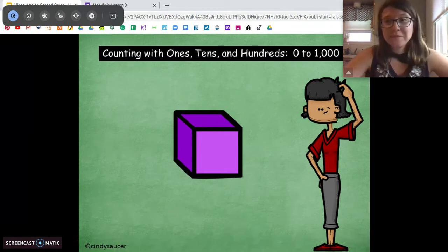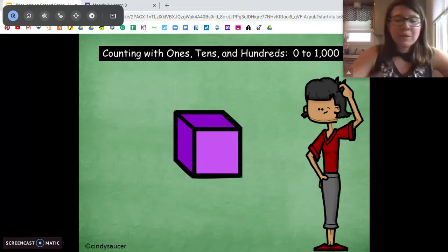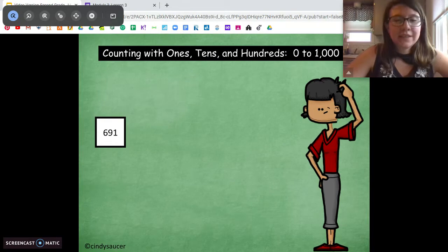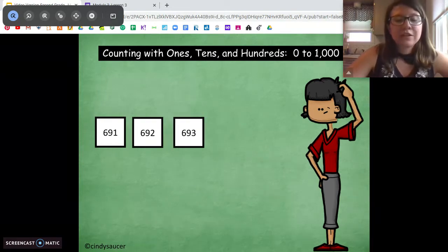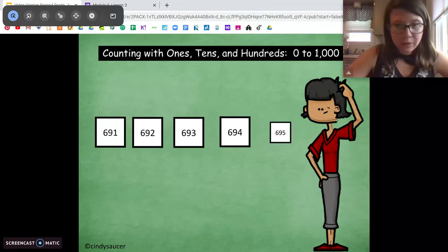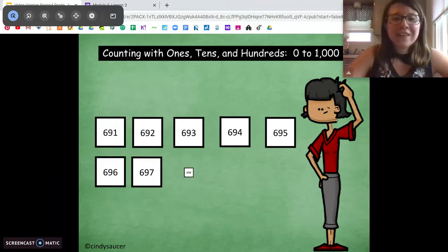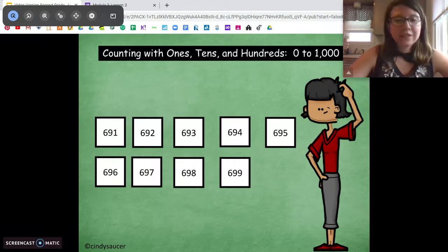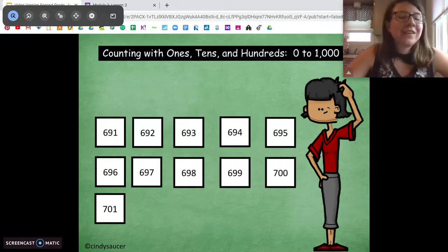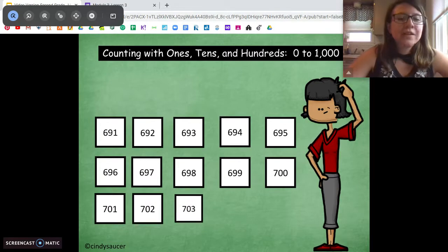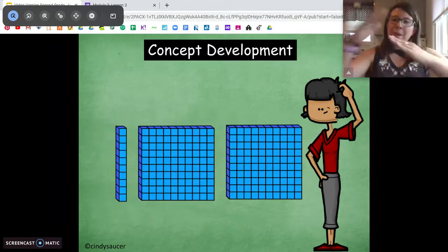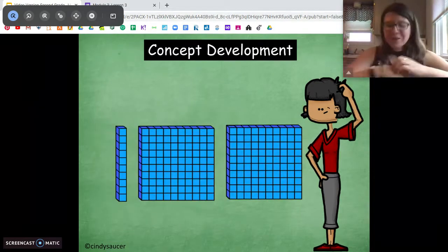Now what are we counting by? Ones. Very good. I'm going to start at 691. 691, 692, 693, 694, 695, 696, 697, 698, 699, 700, 701, 702, 703, and pause. Awesome job.